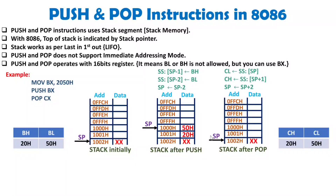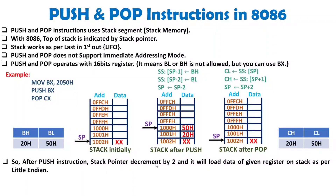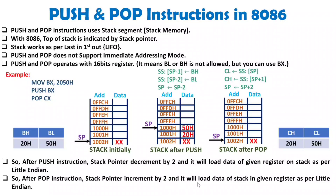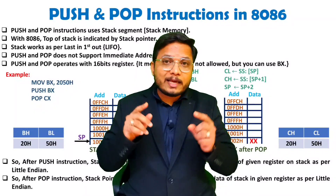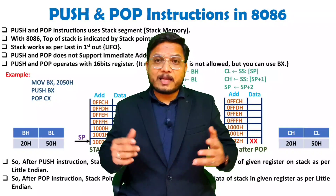So when you do push and pop operations, you are loading data onto and taking data from the stack, and this happens as per little endian: higher data loads on higher address, lower data on lower address. During push, the stack pointer decrements by 2; during pop, the stack pointer increments by 2. Push decrements the stack pointer by 2 and loads data onto the stack as per little endian. Pop increments the stack pointer by 2 and loads stack data into the given register. If you have any queries, post them in the comment box. Thank you for watching.